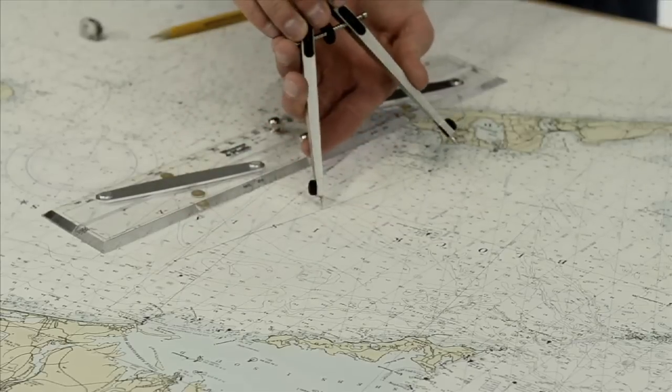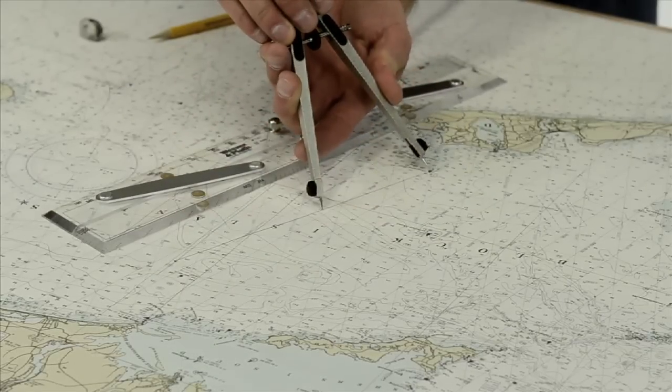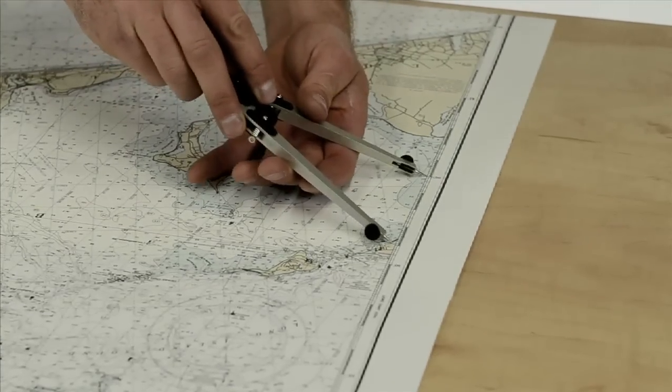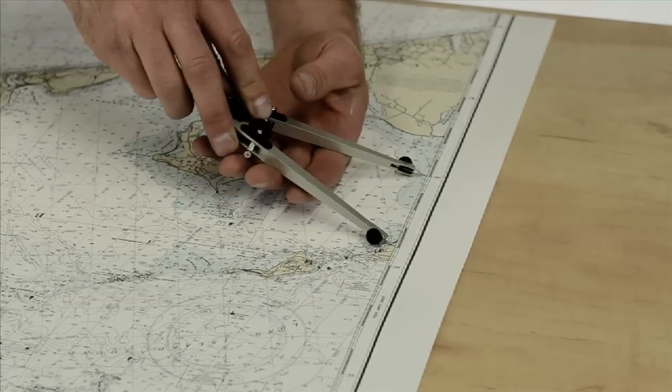It's less than five, so push the dividers together and measure the remaining distance. Comes to four nautical miles. So five plus four is nine nautical miles.